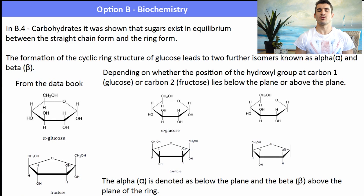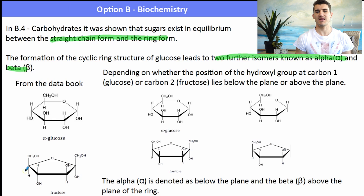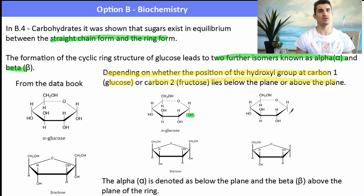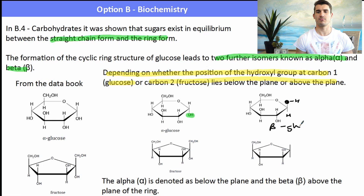In B4 we looked at carbohydrates and we know they also exist in ring structures. From the formation of these ring structures we get two other isomers known as alpha and beta. From the data book you're given alpha glucose, and depending upon the position of the hydroxy group at the C1 carbon - or C2 carbon on fructose - it depends whether it lies above or below the ring whether it will be alpha or beta. The alpha form is when the OH is below the plane, and the beta form is when the OH is above the ring.